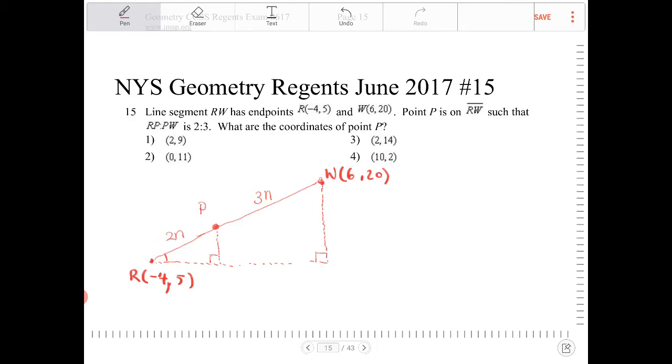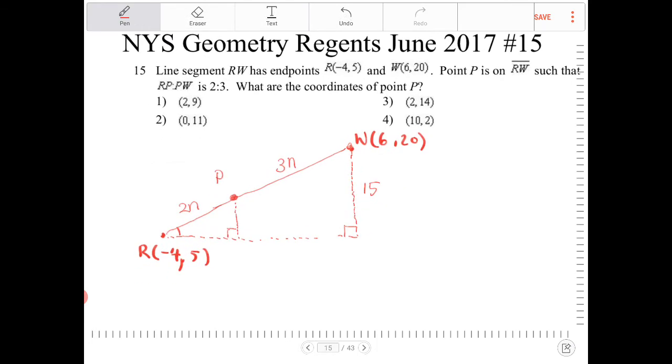I know the dimensions of the large right triangle. The vertical, the height of this large triangle, will have a height of 20 minus 5, which is going to be 15. The horizontal component is going to have a length of 6 minus negative 4, which is going to be a value of 10. So the length of the horizontal is 10, and the vertical will be 15.